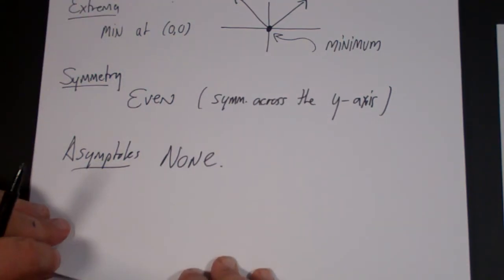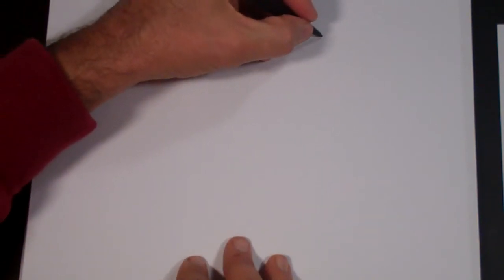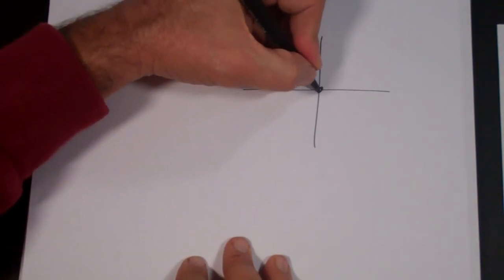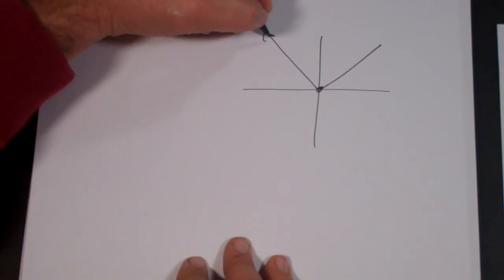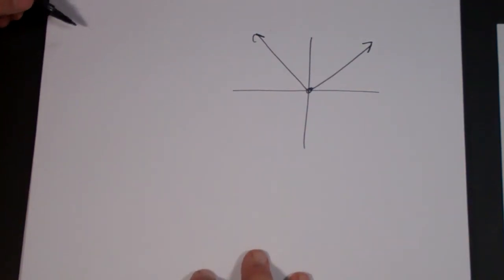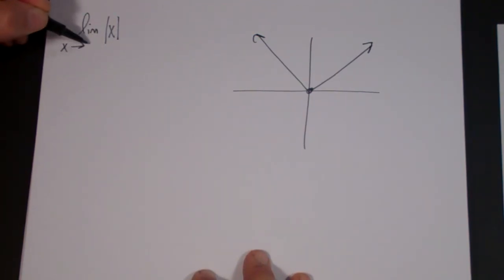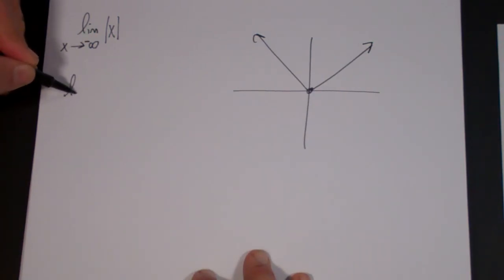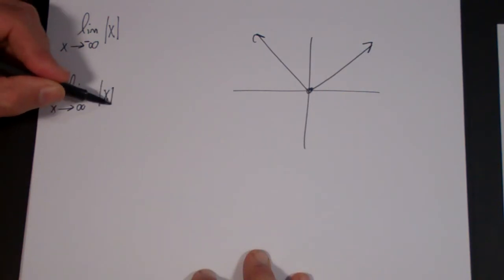And then the last step is the end behavior. The end behavior has to do with what happens to the function as x gets very large, positive or negative. We are going to write in limit notation. So we are going to write limit of absolute value of x as x goes to infinity or negative infinity. Let's do negative infinity first. And then the limit as x goes to positive infinity of absolute value of x.